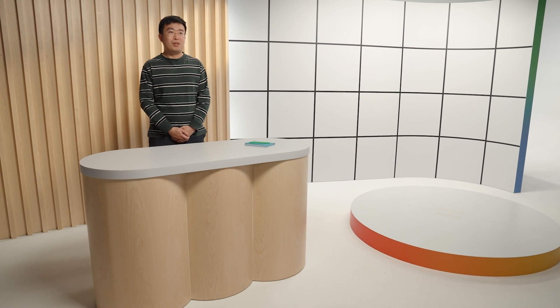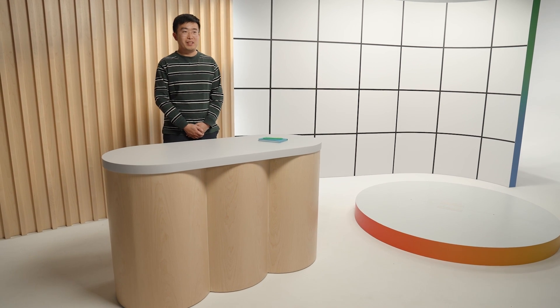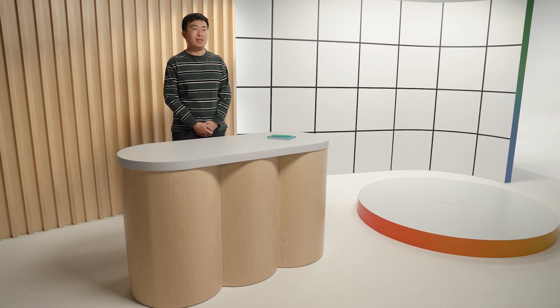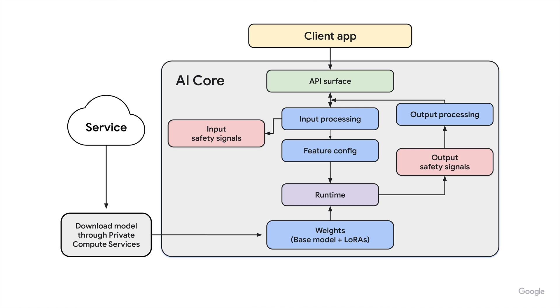AI Core is also designed from the ground up with the user's privacy and security in mind, with several safety features built in. Both the input prompt and the results generated by the Gemini Nano runtime are evaluated against our safety filters before returning results to the client application. AI Core is compliant with the private compute core concept introduced at Google I/O 2021. Specifically, AI Core cannot bind to most other packages — the only exceptions are a limited set of system packages, and that list can only change during a full Android OTA update. AI Core does not have direct internet access; it routes all internet requests, such as downloading the model, through an open-source companion APK called Private Compute Services, whose APIs must explicitly show the privacy-first nature of the use case.